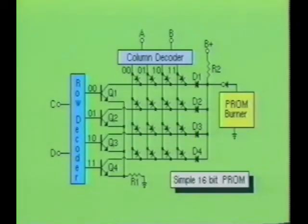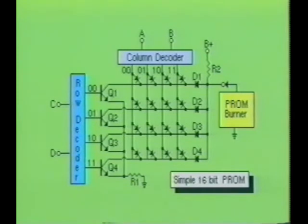A factory fresh PROM can be programmed with a PROM burner. The PROM burner is a specialized piece of equipment designed to generate high-energy pulses which destroy the desired links to match the contents of the user's data file.